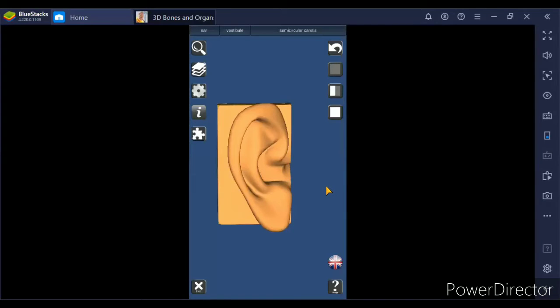First is external ear. It is the outermost part of the ear which has three main parts. The first is ear pinna. So here you can see this is ear pinna. It is made up of cartilage and covered by the skin. The main function of the ear pinna is collects the sound waves and directs into the auditory canal.